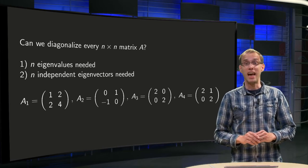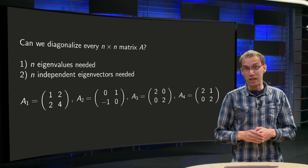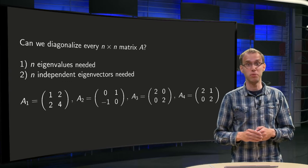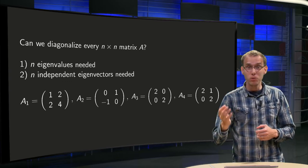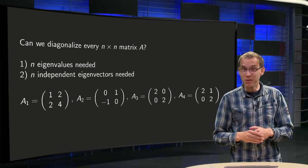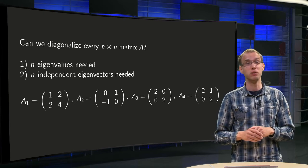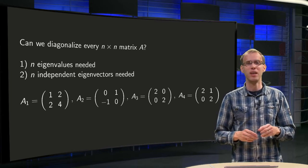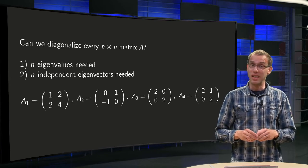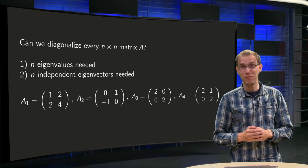Can we diagonalize every square matrix A? We may have complex eigenvalues, so in that case a matrix will not be real diagonalizable. But suppose we do not have complex eigenvalues — it's every n by n matrix with only real eigenvalues, so n real eigenvalues. Unfortunately it is not that easy. We cannot diagonalize all matrices; we also need enough independent eigenvectors.